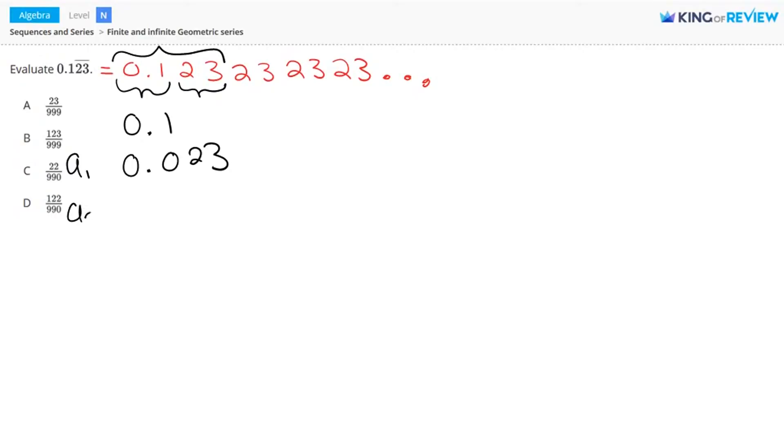Now for the second term of the repeating portion of this decimal, that would be here. How do you represent this portion? We represent it as 0.000023. And next we're going to represent this portion. This is 0.00000023. And you could keep going. So you're breaking this repeating decimal into a series of terms.